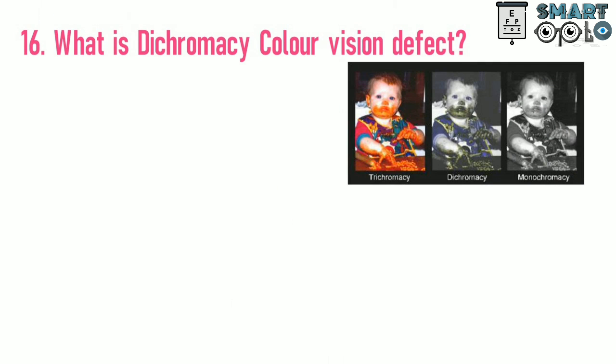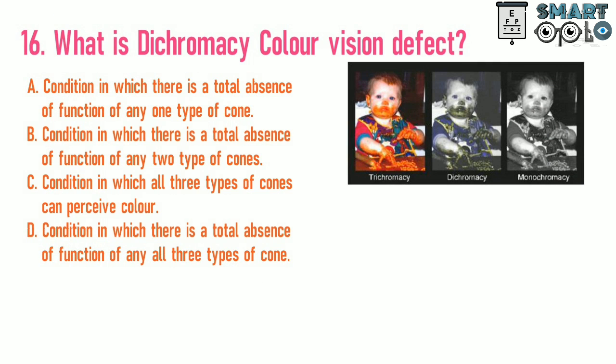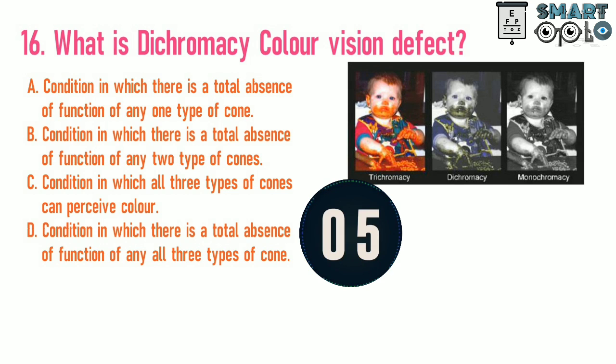Question 16. What is dichromacy color vision defect? A. Condition in which there is total absence of function of any one type of cone. B. Condition in which there is total absence of function of any two types of cones. C. Condition in which all three types of cones can perceive color. D. Condition in which there is a total absence of function of all three types of cones.